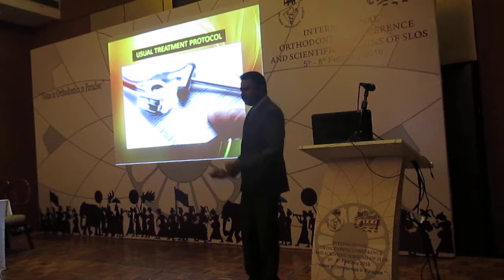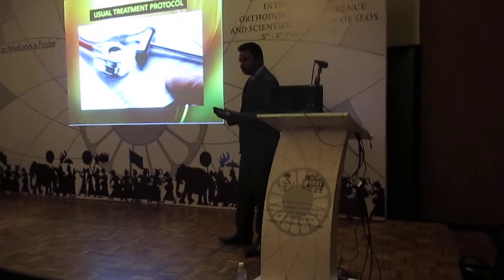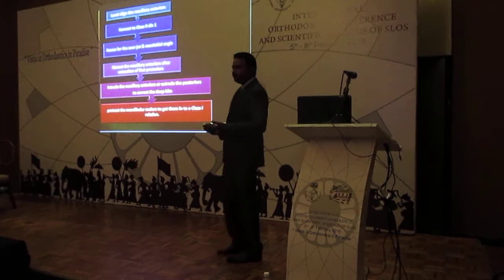You know about Class 2 Division 2 malocclusion — we are familiar with the features: the classical features, the deep overbite, the Class 2 molar relationship, and the Class 2 canine relationship. We are aware of it and will not go into detail about it.